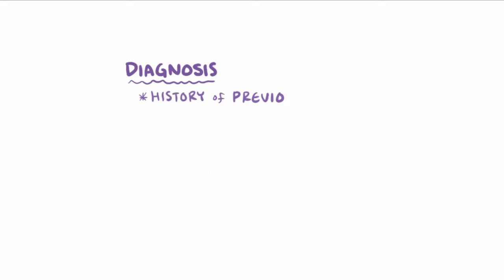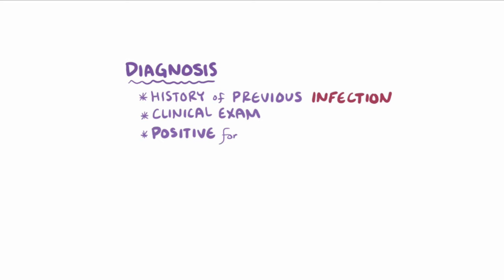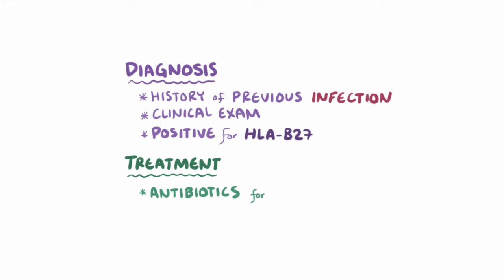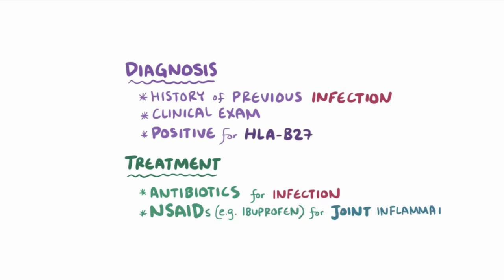Reactive arthritis is usually diagnosed based on the history of previous infection and the clinical exam. Also, testing for the HLA-B27 gene is often positive in those with reactive arthritis. Treatment focuses on identifying the infection that caused the problem, which usually means antibiotics. Non-steroidal anti-inflammatory drugs like ibuprofen can be used for joint inflammation, and if this doesn't work then steroids can dampen the inflammation.